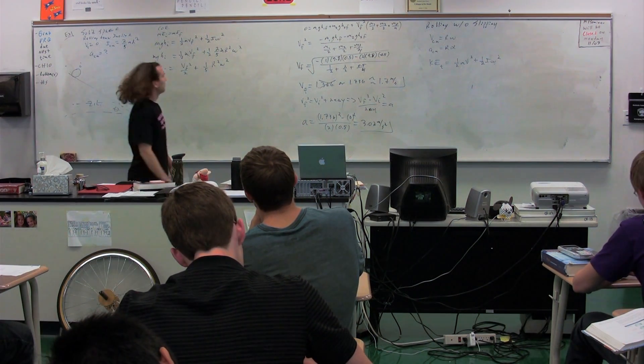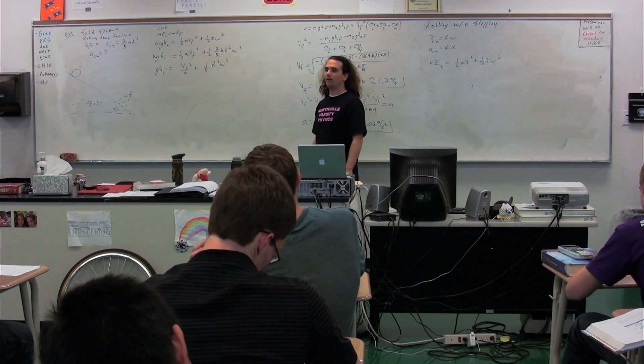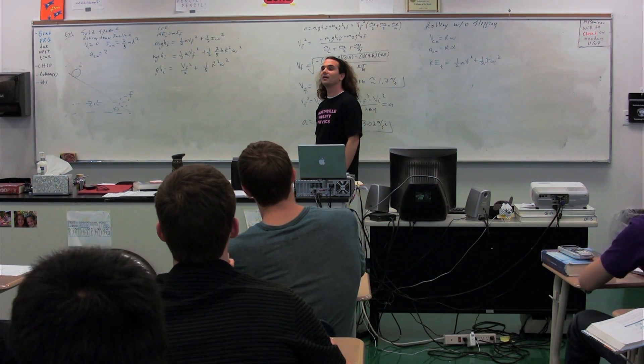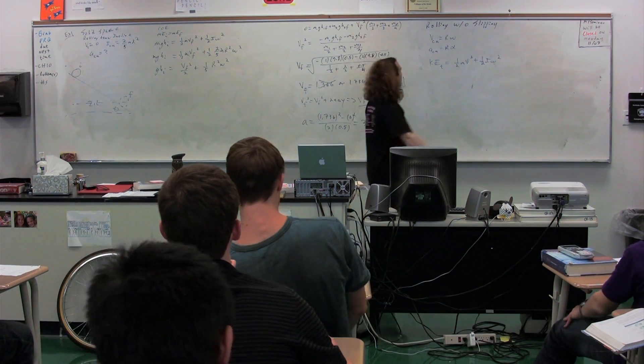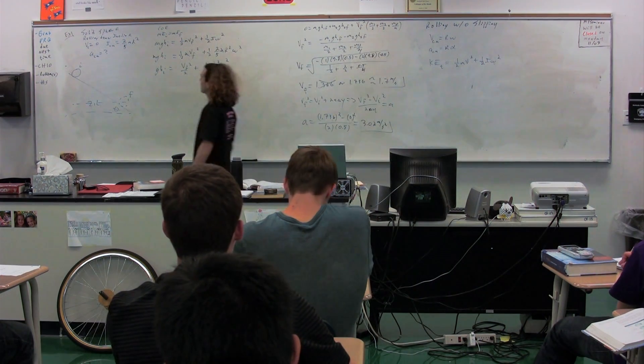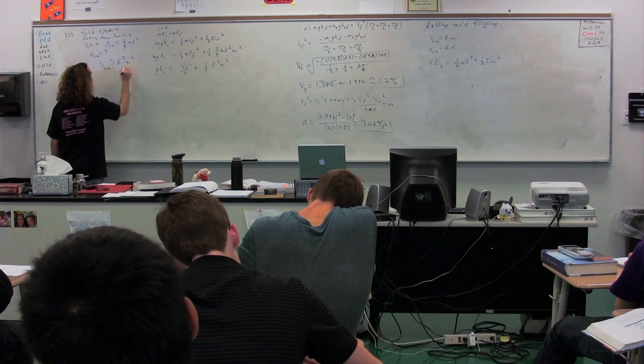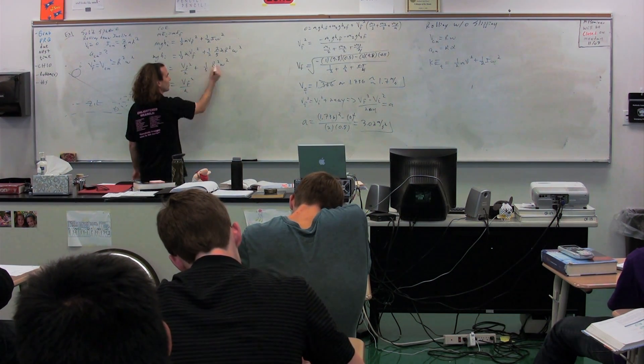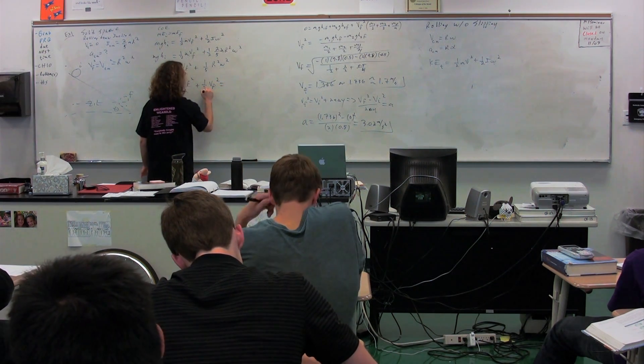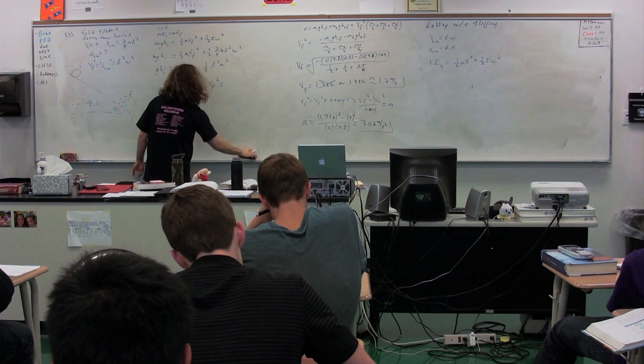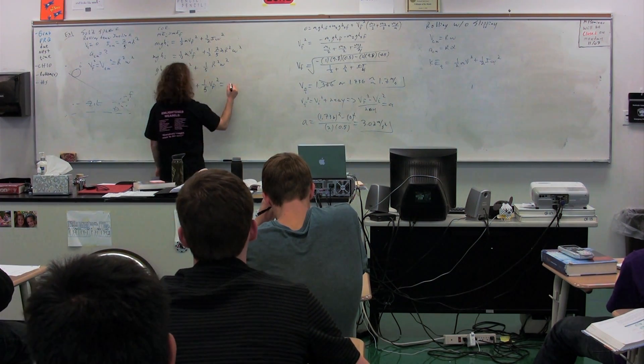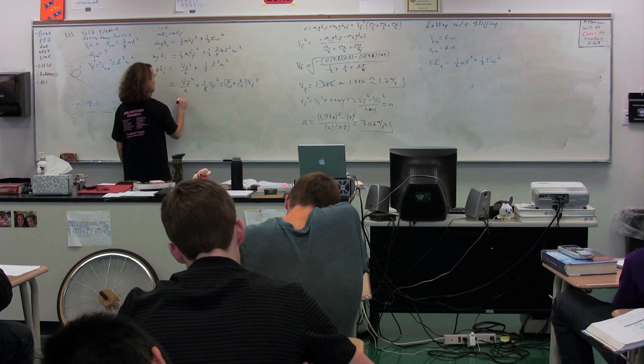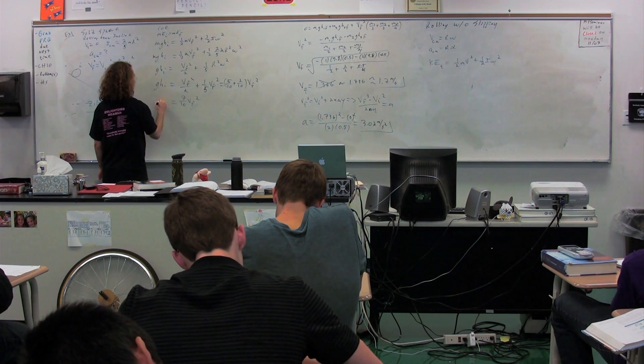We know the velocity of the center of mass equals r times omega. Therefore, the velocity of the center of mass squared equals the radius squared times omega squared. So we can replace r squared times omega squared with velocity final squared. So we have one-half plus one-fifth, five-tenths plus two-tenths times velocity final squared, so seven-tenths velocity final squared. We still have G height initial on the left-hand side.